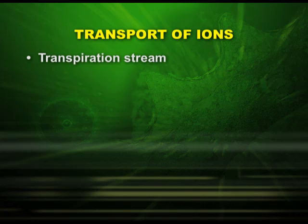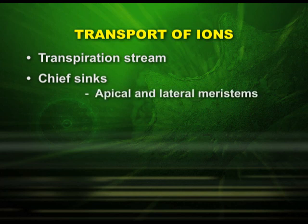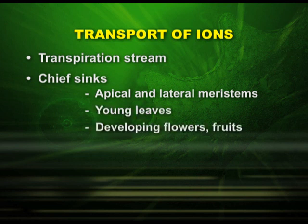After the active absorption of ions, let us see how mineral ions are translocated. The important features of translocation are: first, it takes place by the transpiration stream. Secondly, there are chief sinks in the plants — apical and lateral meristems, young leaves, and developing fruits and storage organs.